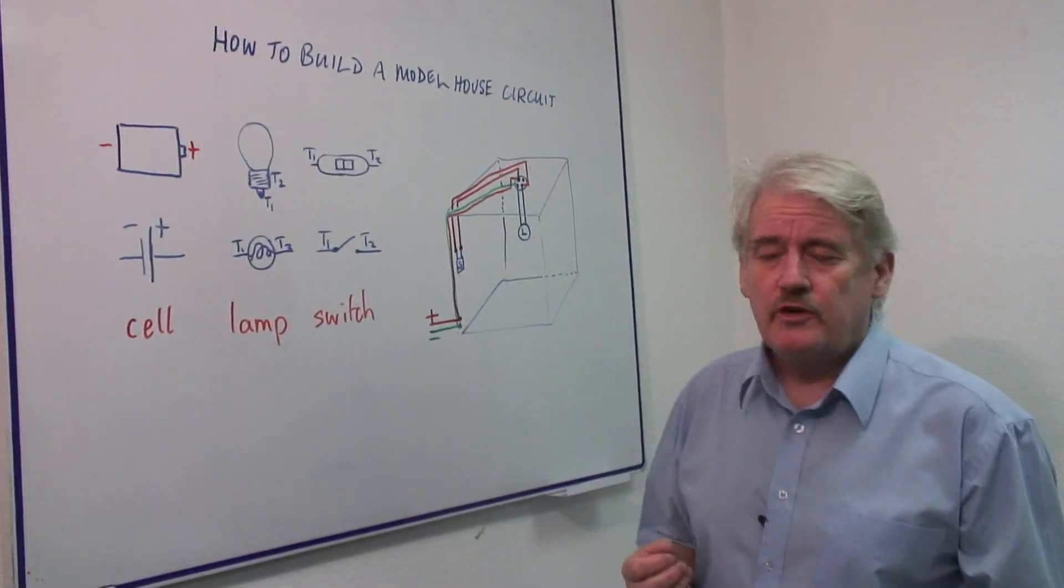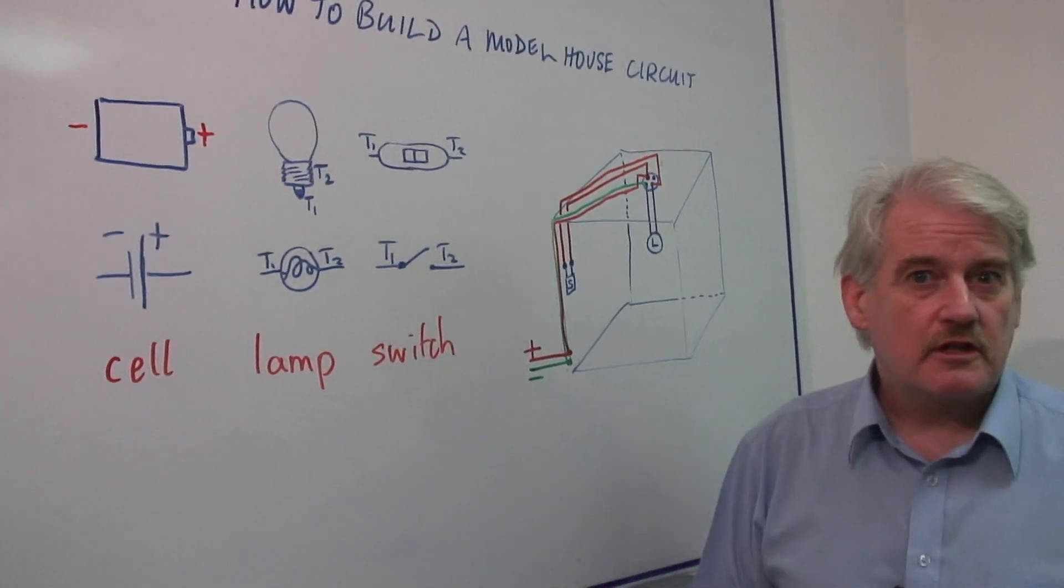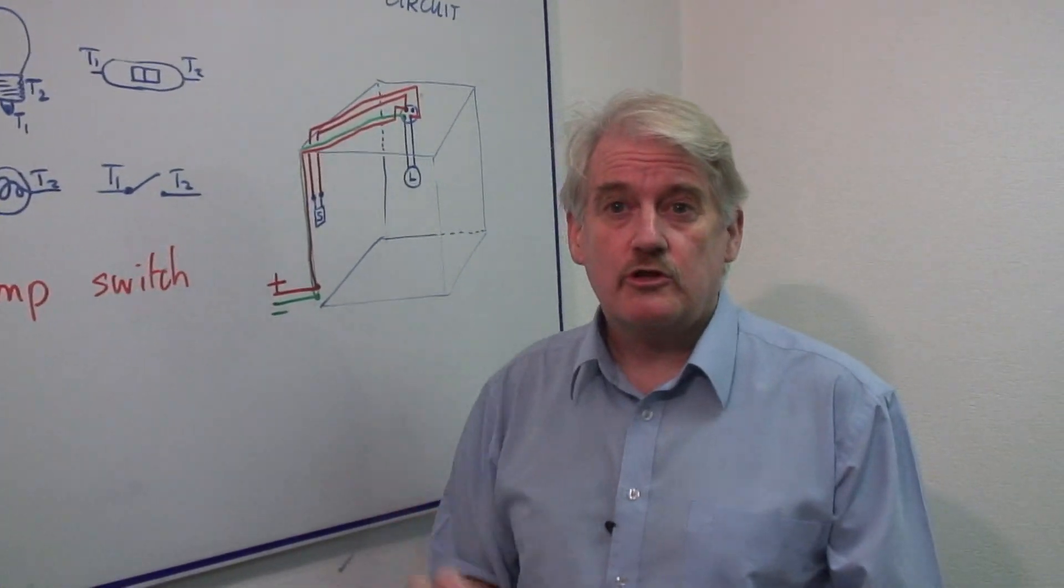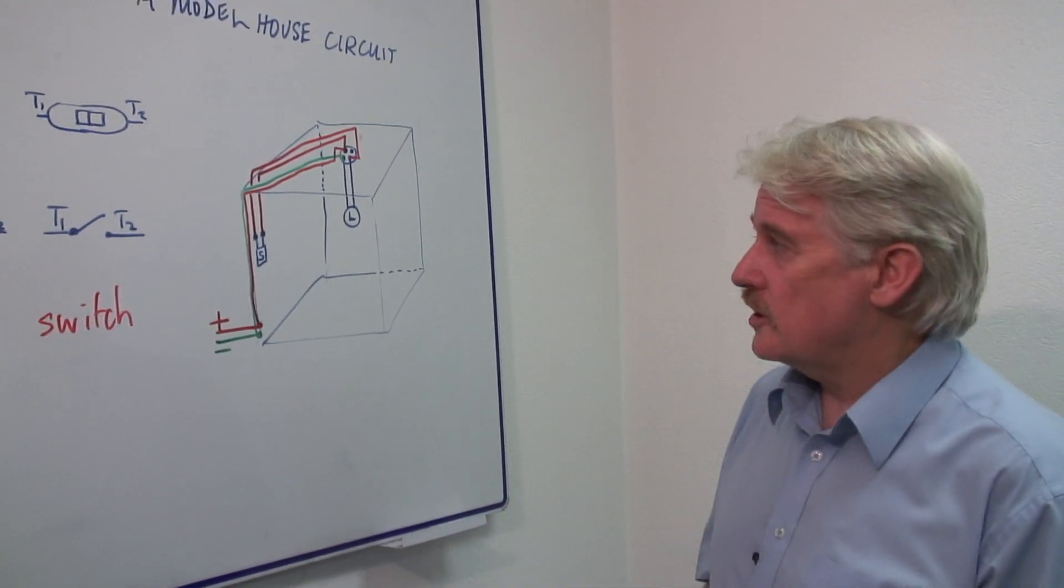It's only lamps you can get small versions of. In model houses, you don't usually have things like washing machines, because we don't make miniature washing machines. So, let's have a look at how the circuit actually works.